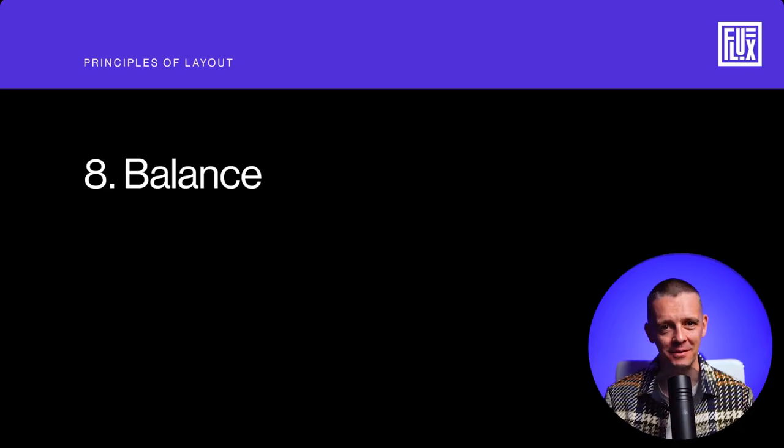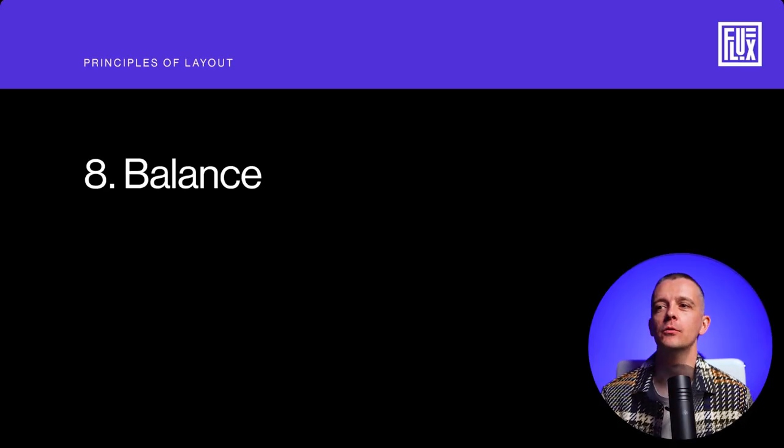The next principle, number eight, is balance. How do you make things feel balanced? For a lot of people, they do it by symmetry. Symmetry is often employed because it's the easiest way of achieving balance — center alignment, which we talked about being suitable for certain formats and short sections of text. But symmetry is kind of a lazy, not very interesting way of achieving balance. And with text, it doesn't look the best — it's not the best solution for longer ranges of text.